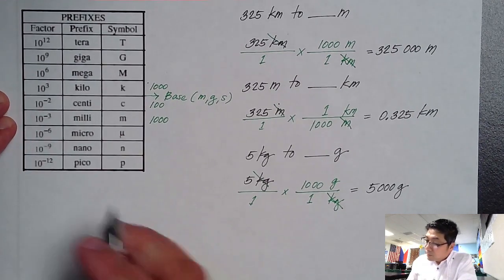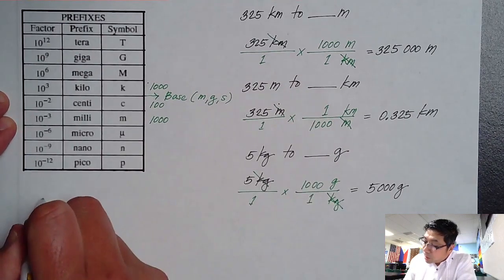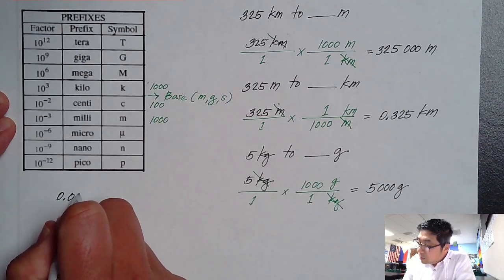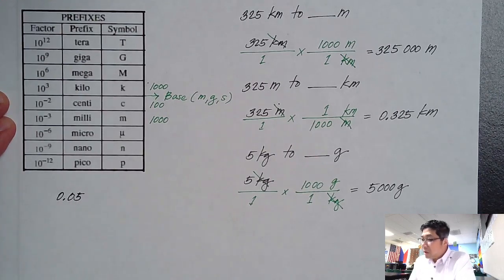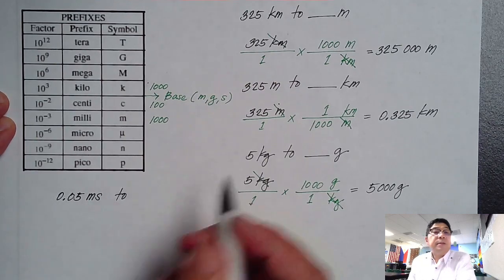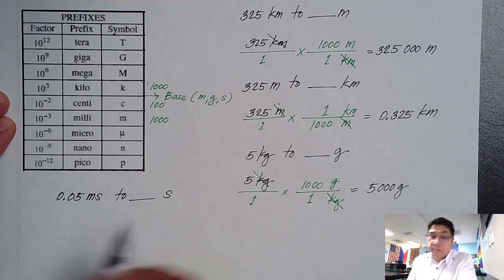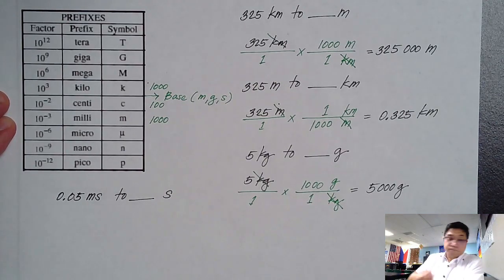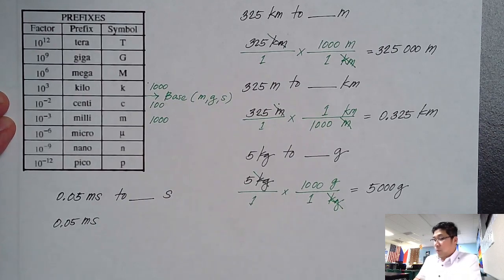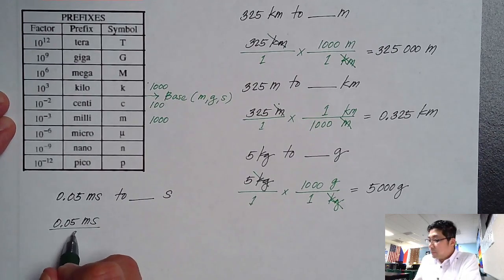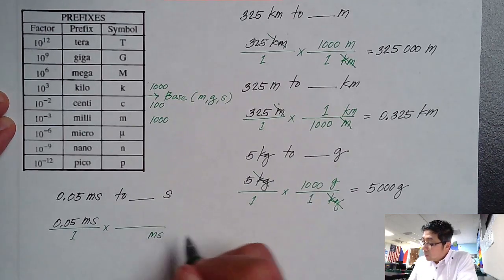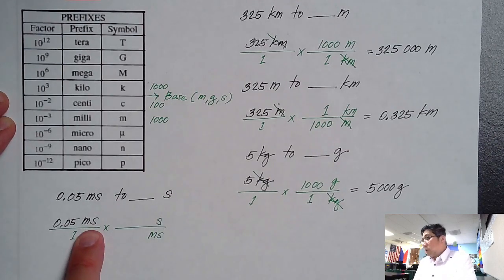For example, I have 0.05 millisecond, and I want to convert this to seconds. So 0.05 millisecond divided by 1, and then let's draw the multiplication symbol in the bar for your conversion. Millisecond is on the bottom and second is on the top, simply because we want to cancel this.